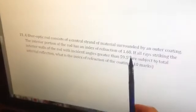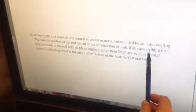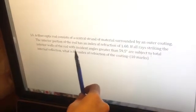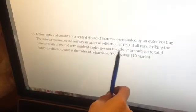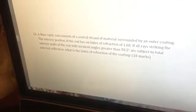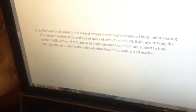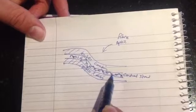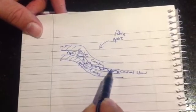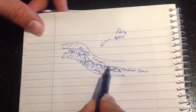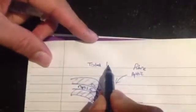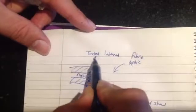The next part of the question says, if all rays striking the interior walls of the rod with incident angles greater than 59.5 degrees are subject to total internal reflection. So that's basically what we want here. It says all rays hitting the interior walls, these walls here, are subject to total internal reflection. This is all about total internal reflection.